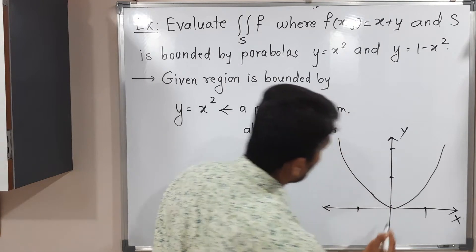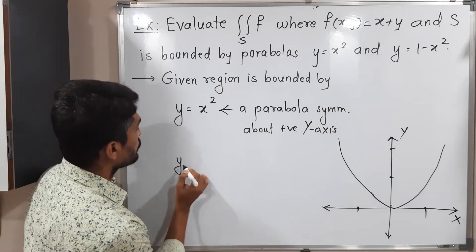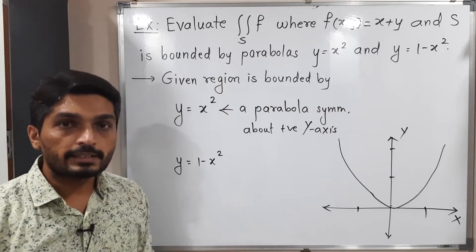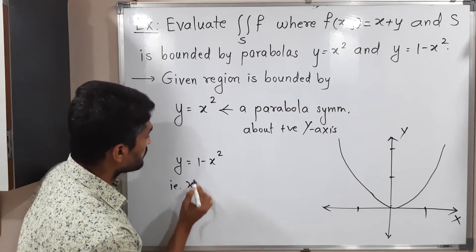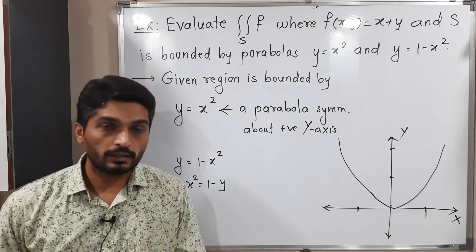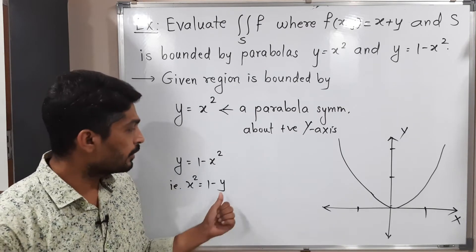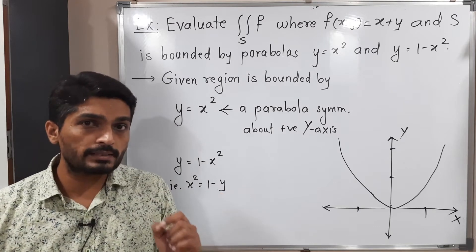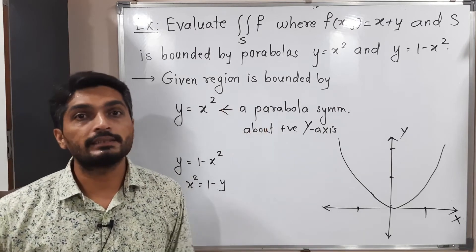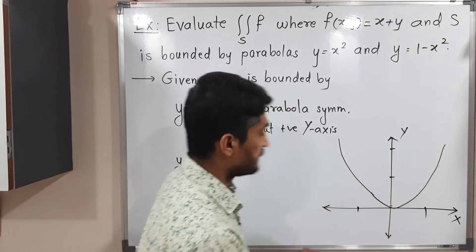Now let us consider the second curve: y = 1 − x², which we can rewrite as x² = 1 − y. Power of y is 1 and power of x is 2, so again it is a parabola symmetric about the y-axis. But y has a minus sign, so this parabola opens in the negative y-axis direction — that means downward.